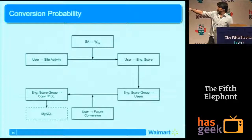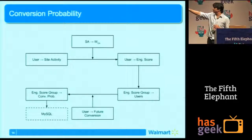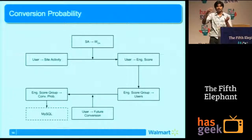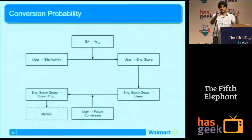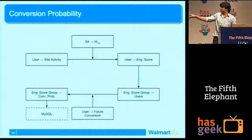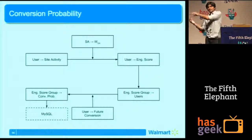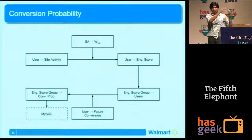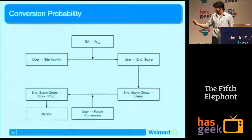Here's how it goes. You have the user, his site activity, and the computed weights. You use both to compute a user-to-engagement-score mapping. Then we group users with very similar engagement scores into buckets. For each engagement score group, we take the users in the bucket and measure how many of them actually ended up converting. This gives us, for each engagement score group, a conversion probability. So once you compute a user's engagement score and he falls into a bucket, we know the probability he will convert for us in the next few days.